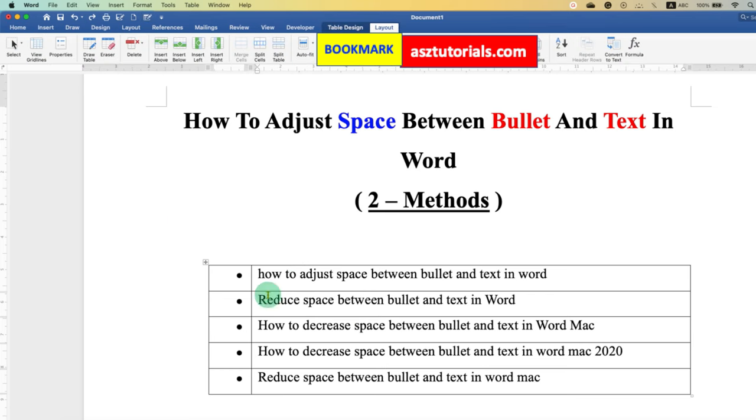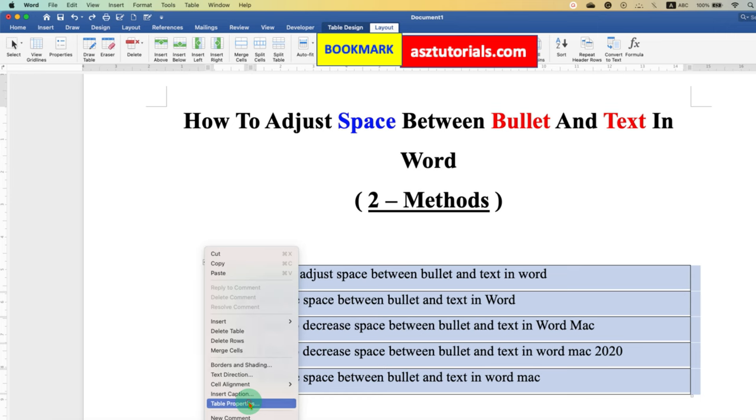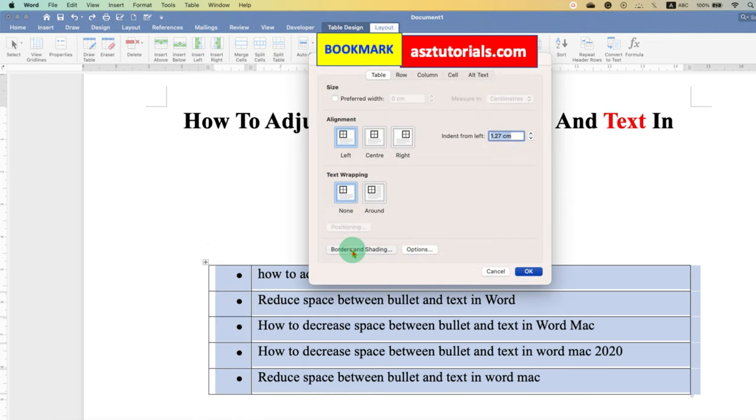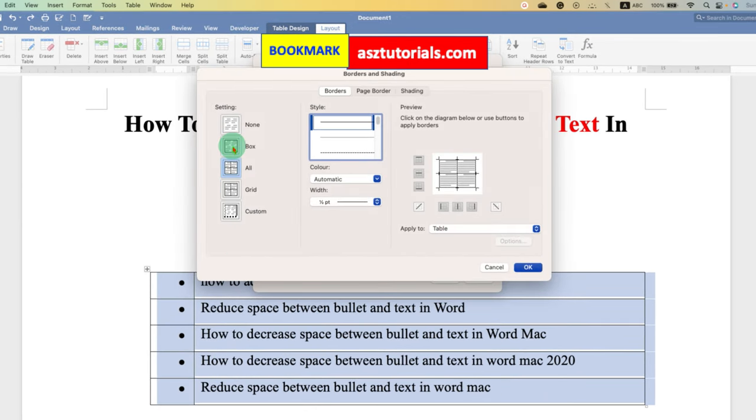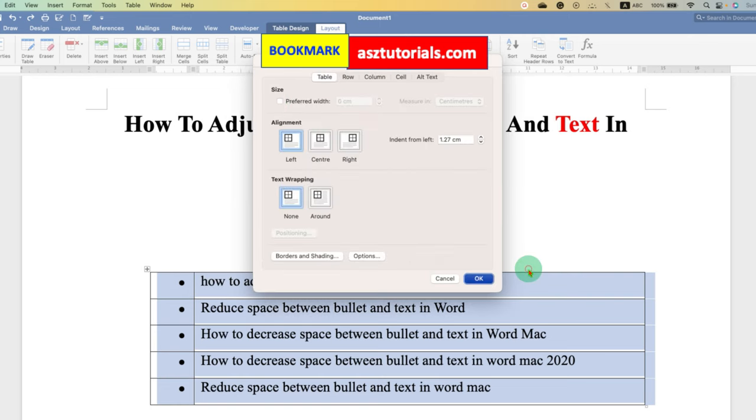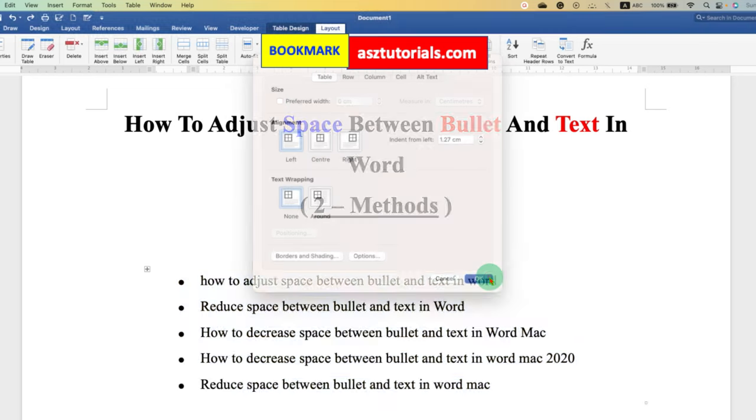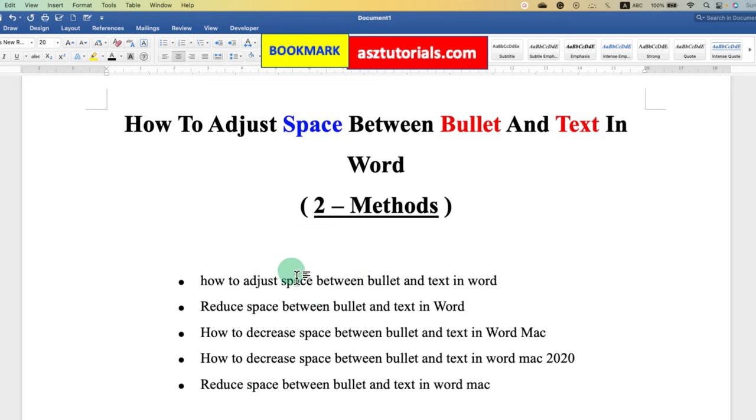Now, we need to remove this outer border. And to do that, click on the small square here to select the table. Go to table properties. And select the option none under borders and shading here. And click OK. And OK. So, this will make outer border invisible.